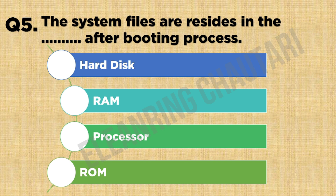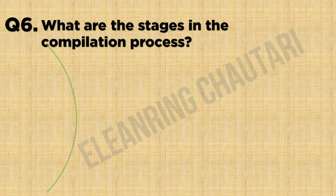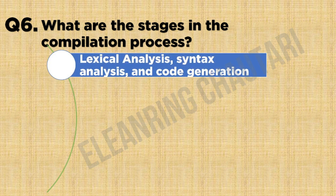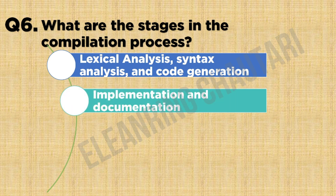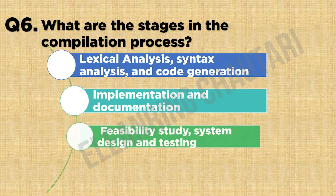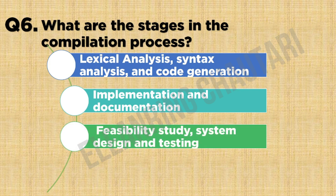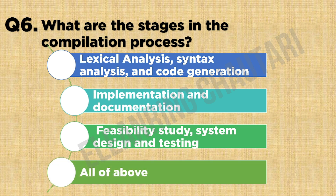Question 6: What are the stages in the compilation process? Option A: Lexical analysis, syntax analysis and code generation. Option B: Implementation and documentation. Option C: Feasibility study, system design and testing. Option D: All of the above.